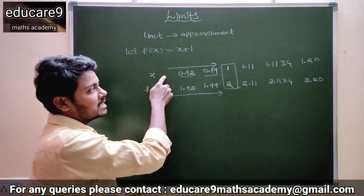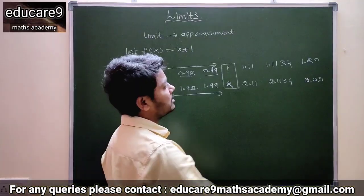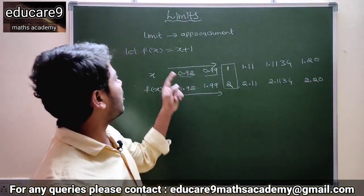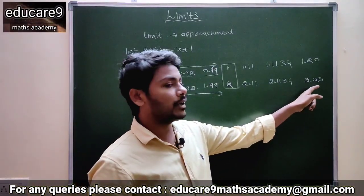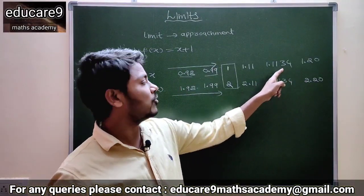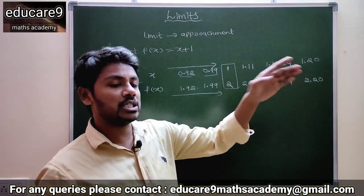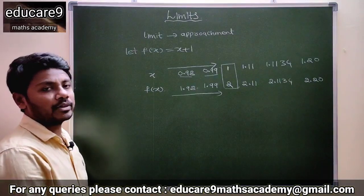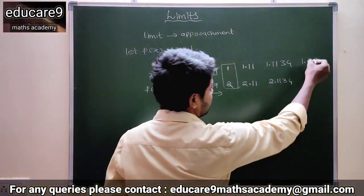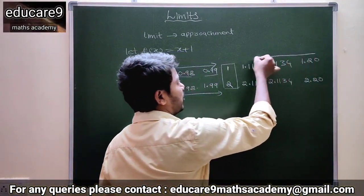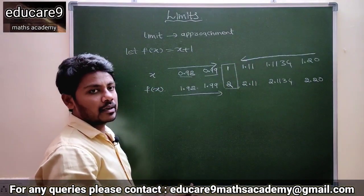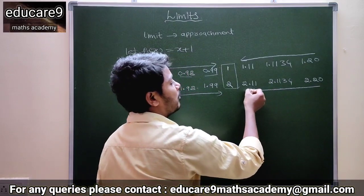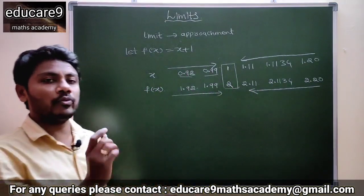So here, if x is equal to 1.20, f of x value is 2.20. If x is equal to 1.1134, f of x value is 2.1134. If x is 1.11, then f of x is 2.11. Clearly, these x values are approaching 1 from the right side, and the f of x values also approach 2 from the right side.